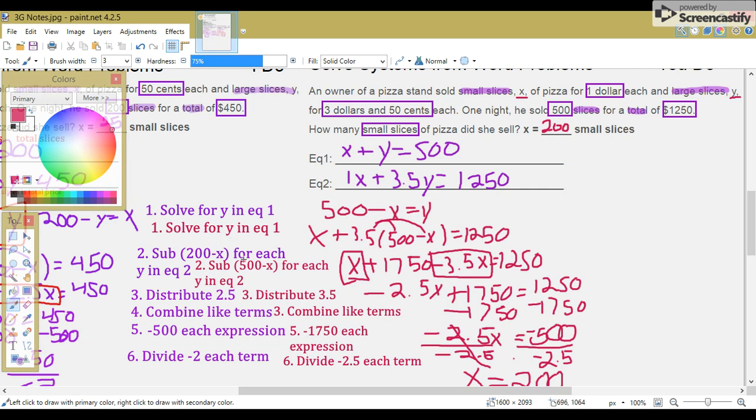Step 2: Substitute 500 minus X for each Y in equation 2. Step 3: Distribute 3.5 into each term of 500 and minus X.